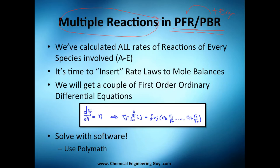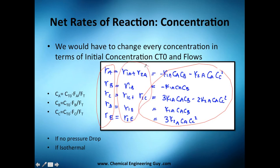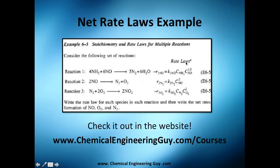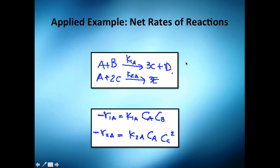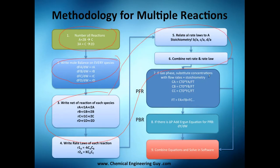First, we've already calculated the rate of reactions for every species involved — that means we have our rate of reactions, the individual rates per species and per reaction, and the net rate of reactions. Looking at the flow diagram, we've numbered the reactions, written the mole balances, and obtained the net rates. Now it's time to actually solve it.